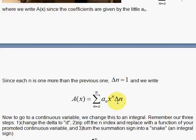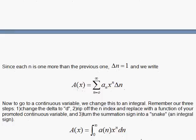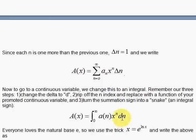To go to a continuous situation, we use the trick I talked about earlier: change delta to d, rip off the index n, replace it with a continuous variable as an argument for a function, and change the summation sign into an integral. We have done that. Now at this point, we notice it would be nice to have the friendlier e as the base, instead of some x.